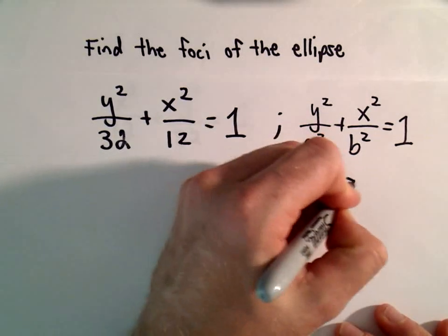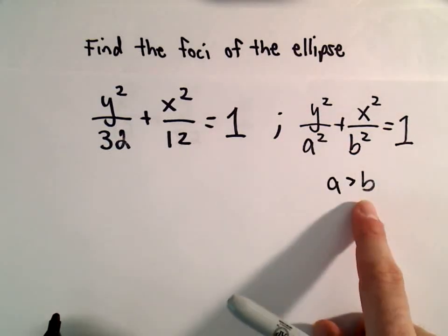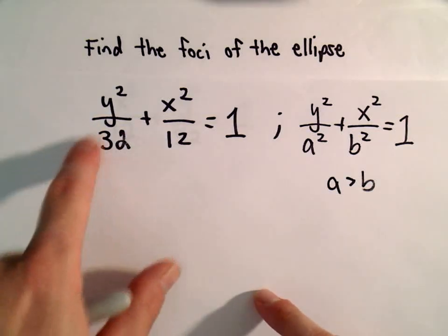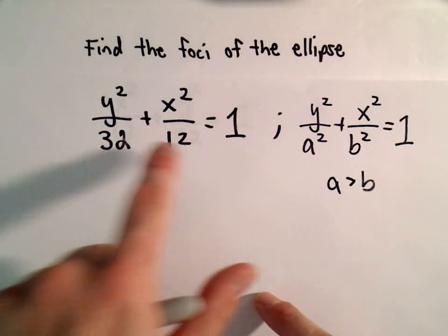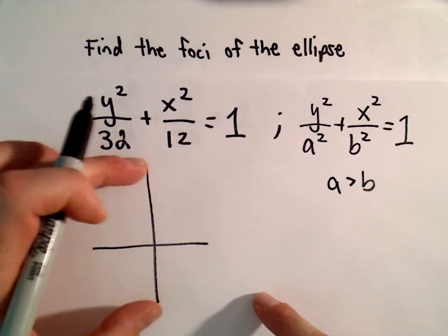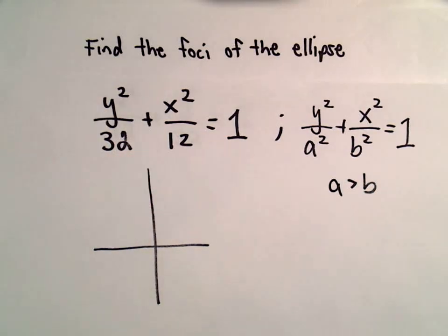This is when a is greater than b. I look at which denominator is larger. 32 is bigger than 12, which tells me that the major axis will be vertical.